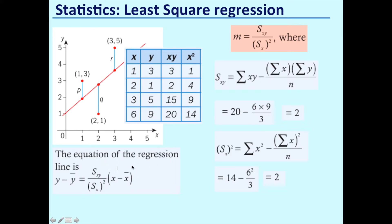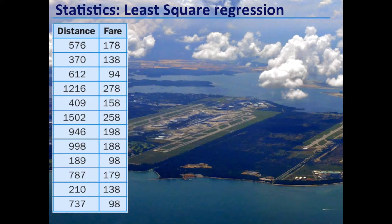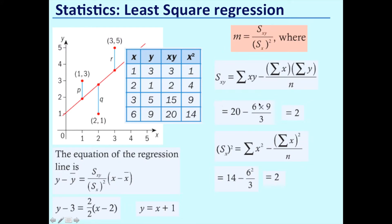Sx squared - the sum of x squared, this is our x squared column - the sum at the bottom is going to be 14 minus the sum of x squared over n equals 2. So the equation of the regression line, we can use this formula: y minus y bar equals Sxy over Sx squared (that's the gradient we found here) multiplied by x minus x bar. We can find y bar is 3, x bar is 2. The gradient is 2 over 2, which is 1. So we end up with the regression line y equals x plus 1. That is mathematically the best line of best fit, and there will only be one answer.